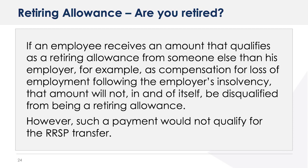If an employee receives an amount that qualifies as a retiring allowance from someone other than his employer — for example, as compensation for loss of employment following the employer's insolvency — that amount will not, in and of itself, be disqualified from being a retiring allowance. For example, a government agency or union may make payments to former employees of an insolvent employer as compensation for loss of employment. However, such a payment would not qualify for the RRSP transfer.